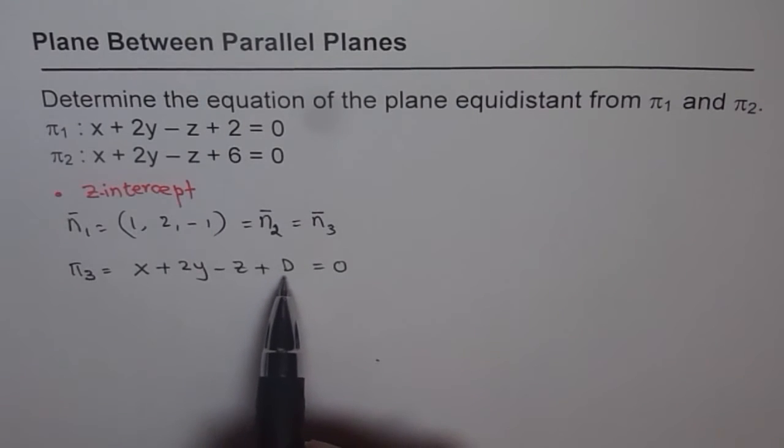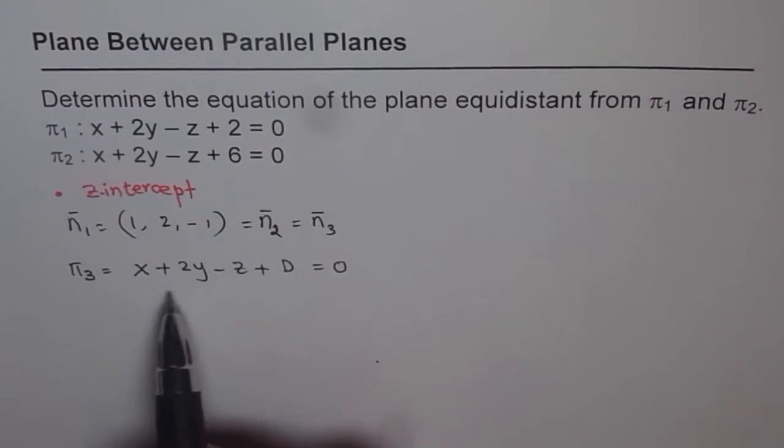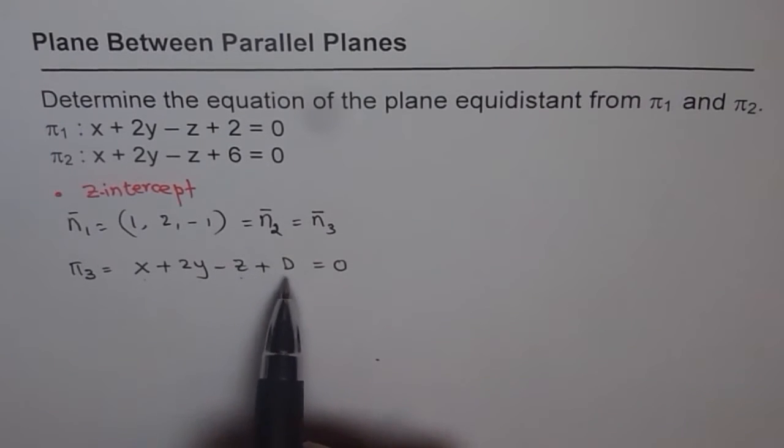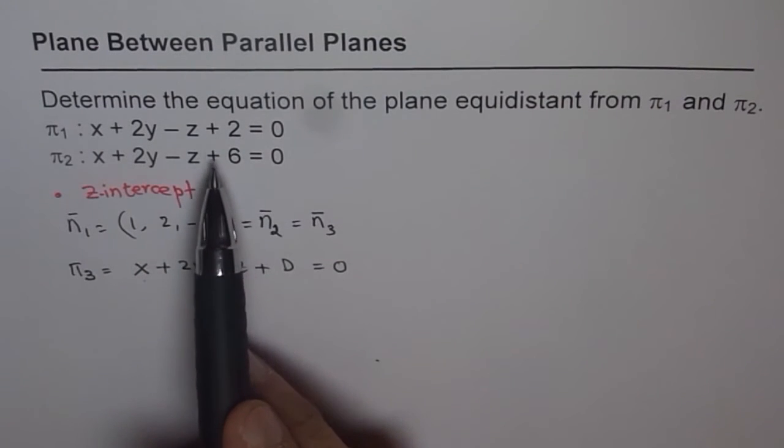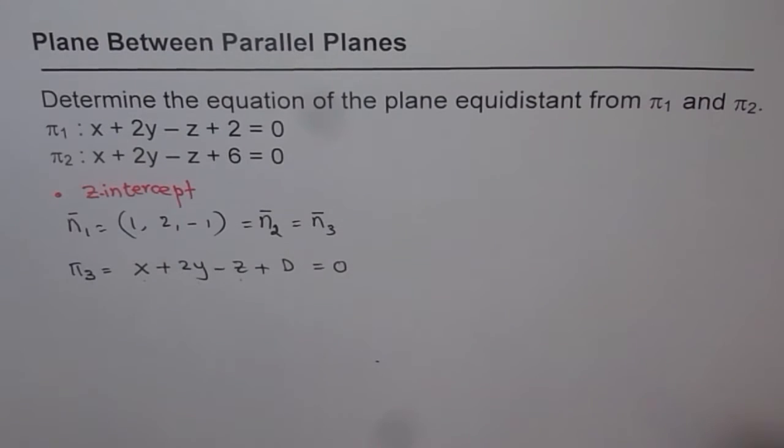To find d, we need a point on the plane. Once we have a point, we can put those x, y, z values and calculate d. Now, how to find this point? That is the question. I hope you got the idea. We will take z-intercepts of both the planes and then find midway between them.